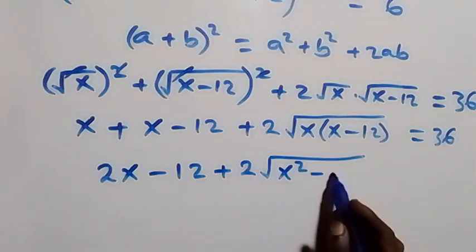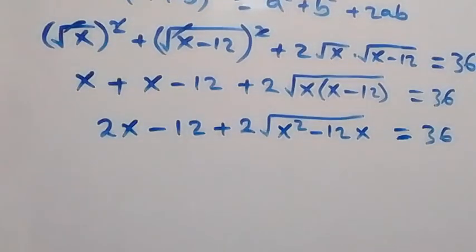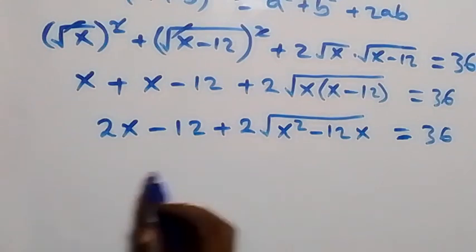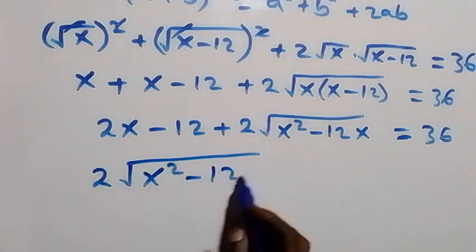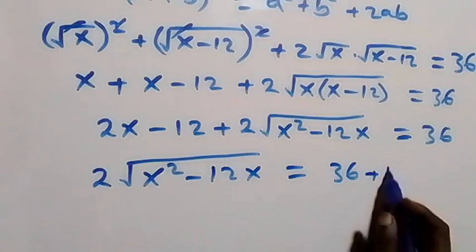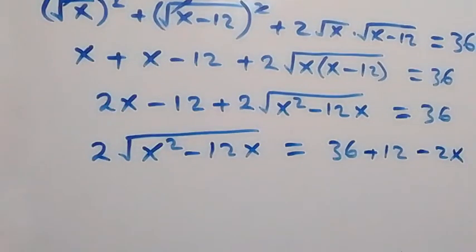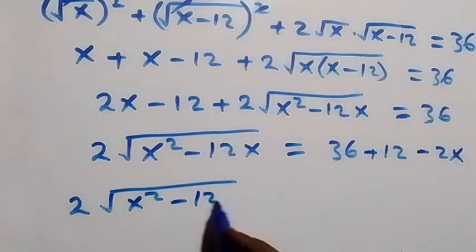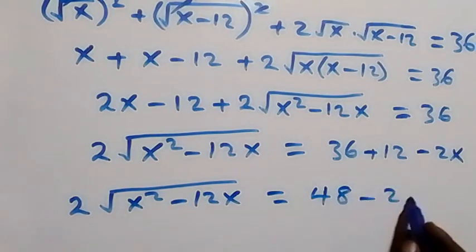Expanding inside the root: x squared minus 12x. We are left with 2 times square root of (x squared minus 12x) equals 36 minus 2x plus 12, giving us 2 times square root of (x squared minus 12x) equals 48 minus 2x.